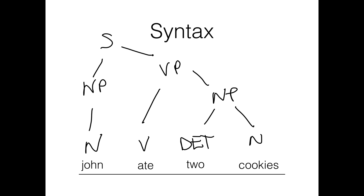This tree diagram I've drawn shows one view of the underlying syntactic structure of the sentence, and if that structure were different, we'd get a different meaning out. 'John ate two cookies' is very different than 'two cookies ate John,' and 'two ate cookies John' isn't a sentence at all.